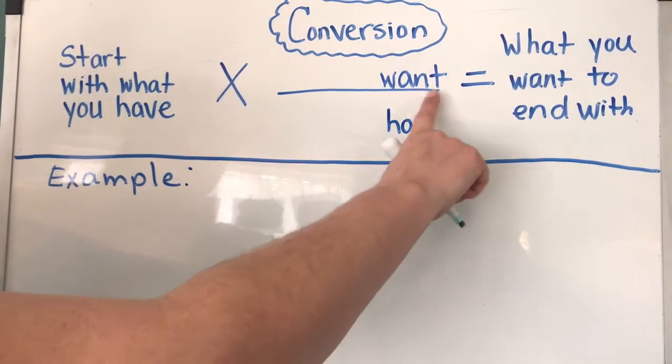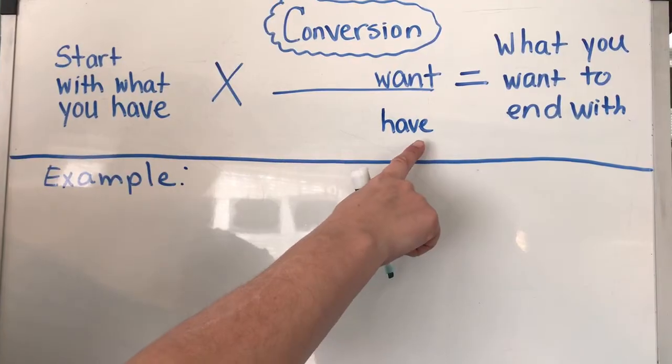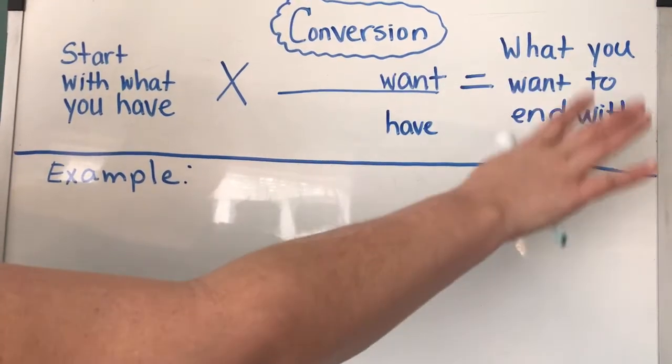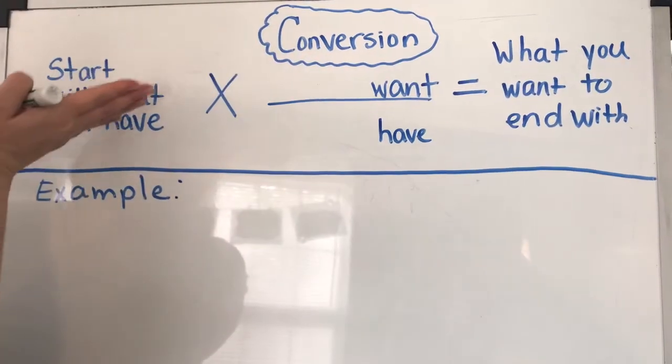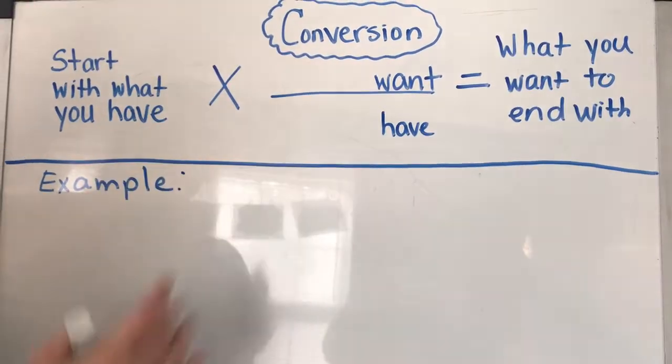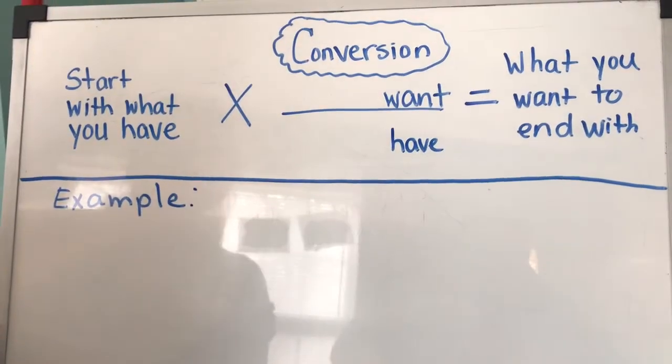And then you're going to want to cancel out what you have so that you end up with what you want. So when you multiply and you have the same thing on top and the same thing on bottom, those can cancel out. So we'll go through that in a minute.